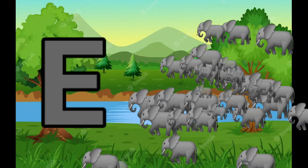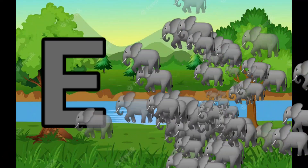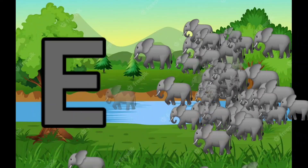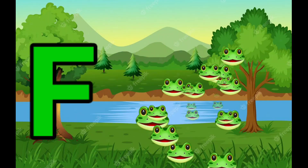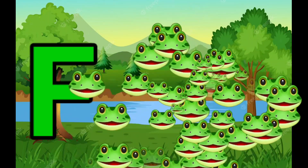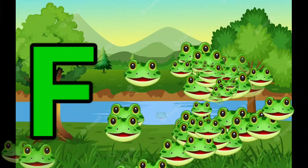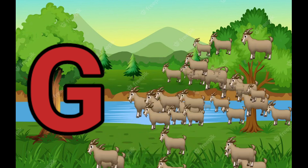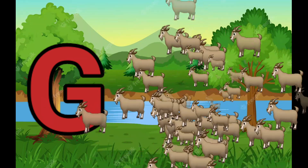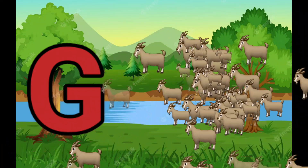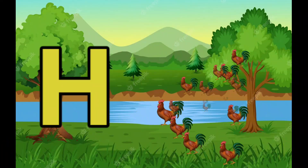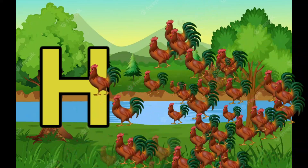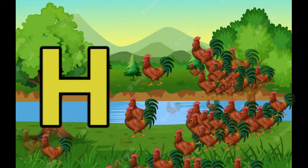E is for Elephant, E-E-Elephant. F is for Frog, F-F-Frog. G is for Goat, G-G-Goat. H is for Hand, H-H-H-Hand.